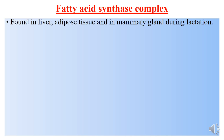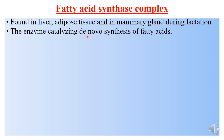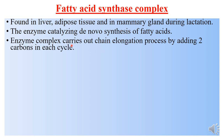The fatty acid synthase complex is found in the liver, adipose tissue, and mammary glands during the lactation period, where its activity is highest. This enzyme catalyzes the de novo synthesis of fatty acids. The enzyme complex carries out chain elongation by adding two carbons in each cycle.